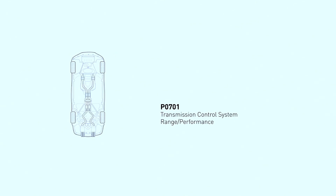First things first, let's talk about what the P0701 code means. P0701 indicates a problem with the transmission control system. This could be due to several reasons, including wiring issues, a faulty transmission control module (TCM), or even a mechanical problem within the transmission.